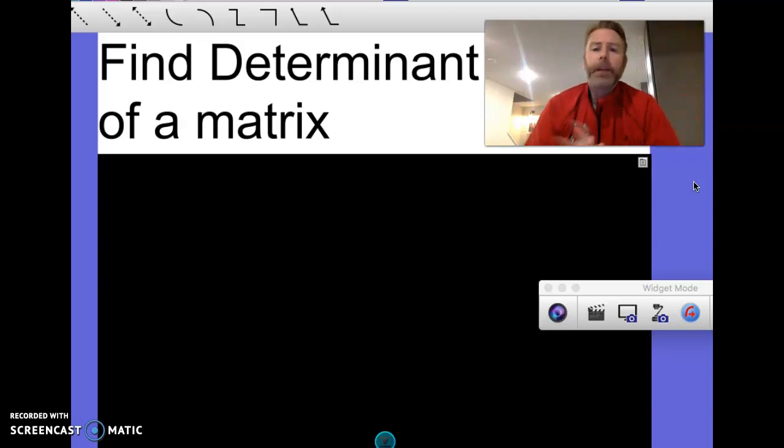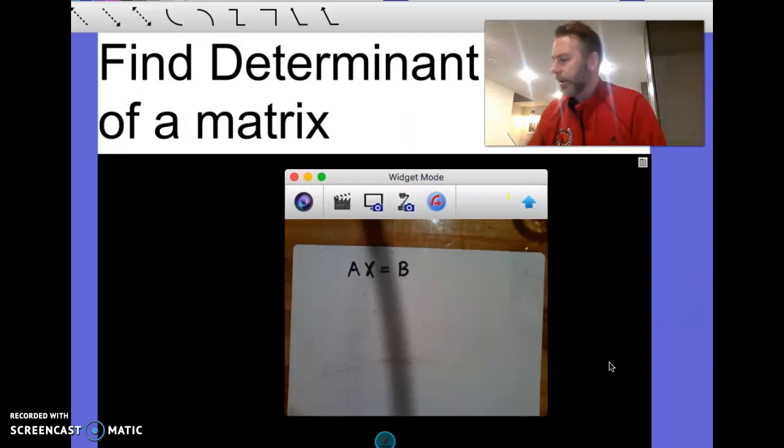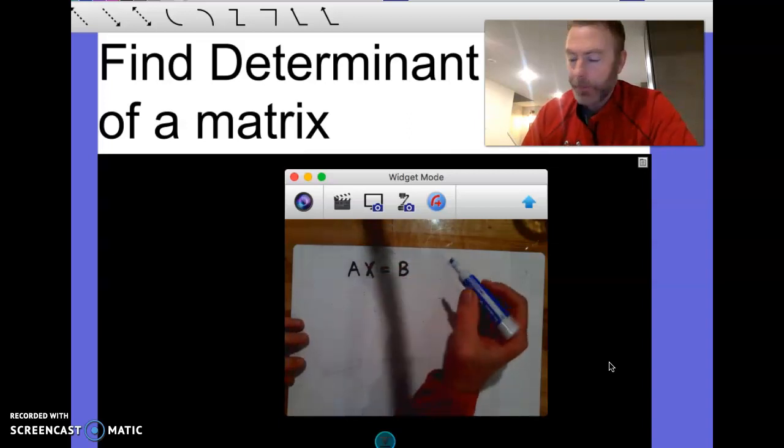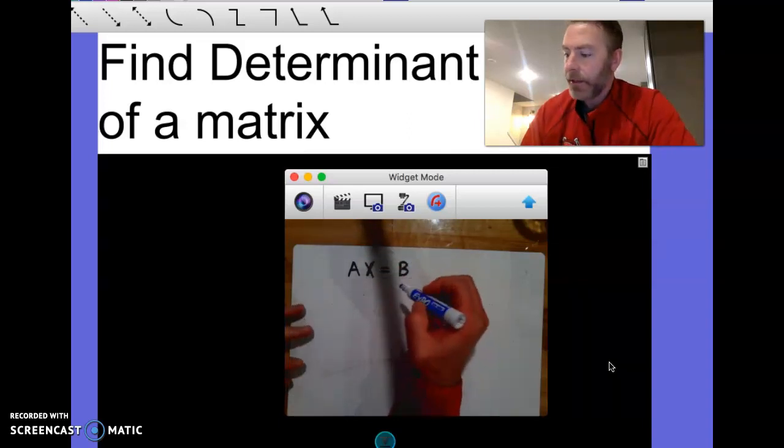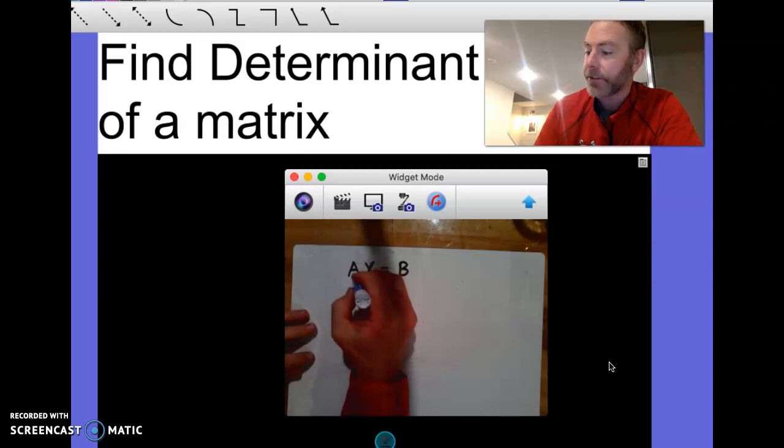But big goal today is we're gonna find something called the determinant of a matrix. So we're actually, just to kind of set this up for a second, I just want to show you guys something. If we take a look right here, here's an equation A X equals B. Now, if all of these variables are matrices, or maybe they're each a matrix, this problem here we haven't been able to solve yet.